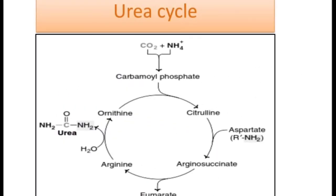So this is how ammonia metabolism takes place: by formation of ammonia, transport of ammonia, and once it is transported to the liver, its detoxification in the form of urea.